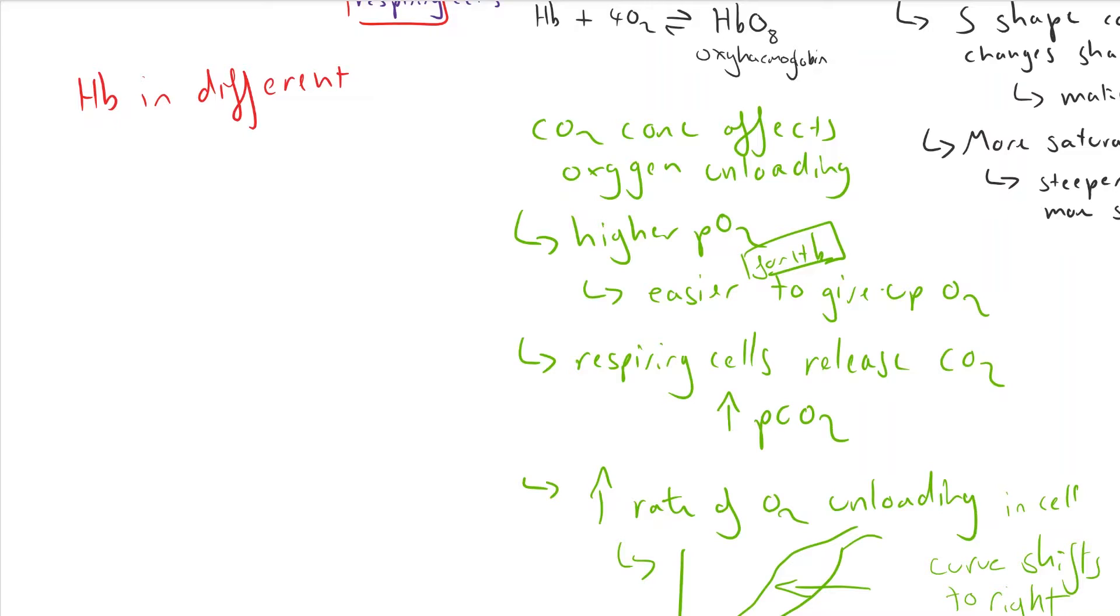Now, hemoglobin can vary in different organisms. And this is also quite an important one that might come up in a question. Different types of hemoglobin have different oxygen transporting capacities, and this can help survival of various organisms. For example, organisms that have low concentration of oxygen environments have hemoglobin with a higher affinity for oxygen.